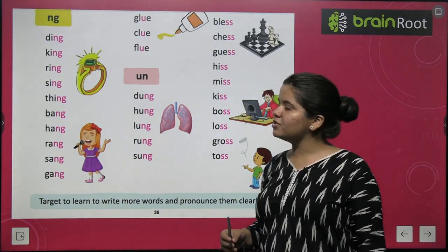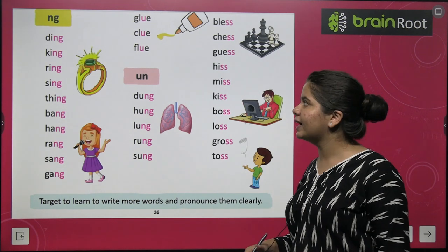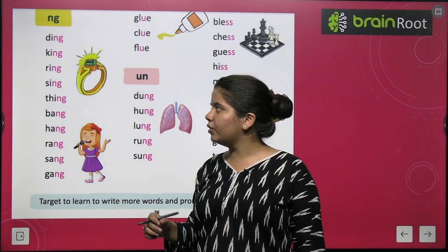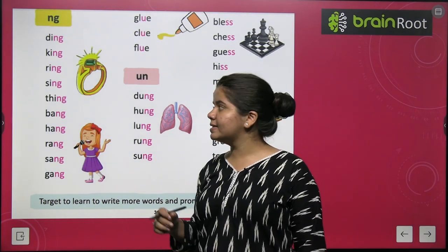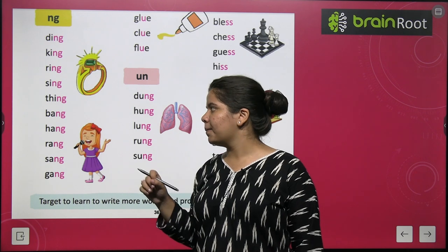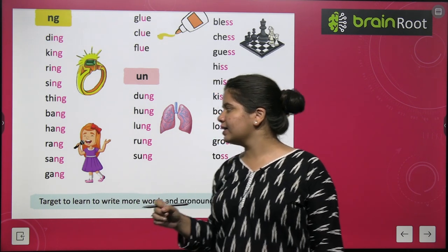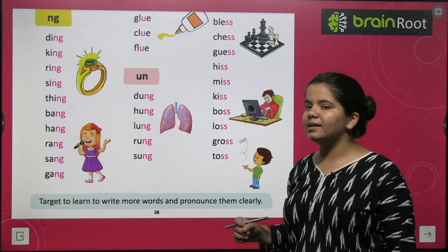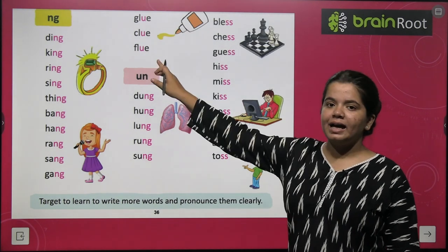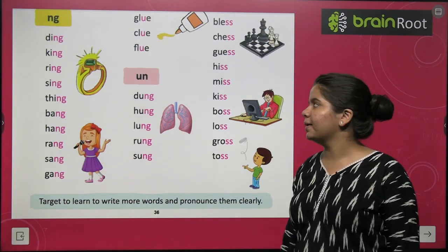Now NG words — words with NG: ding, king, ring, sing, thing, bang, hang, rang, sang, gang. NG comes at the end of these words.